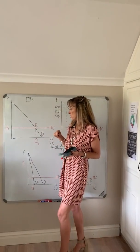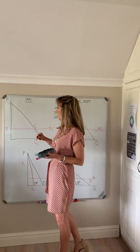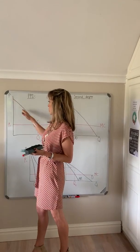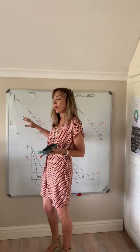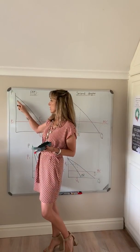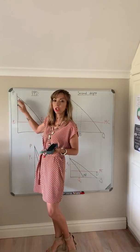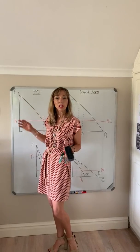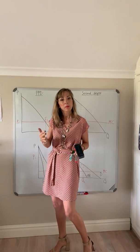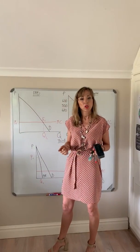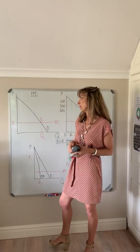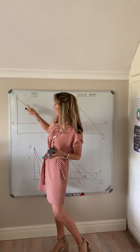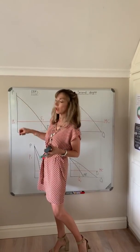Perfect price discrimination is where you look at your demand curve and basically what's happening is your producer is going to charge each and every single consumer their maximum willingness to pay, or their reservation price, according to the various points along your demand curve.